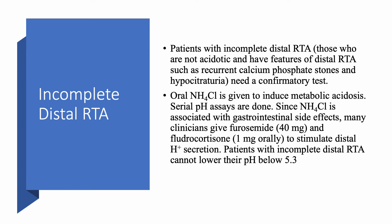What about incomplete distal RTA? In complete distal RTA the serum pH is low, but in incomplete distal RTA the pH is normal, yet the patient has features of distal RTA: recurrent calcium phosphate stones, low urine citrate, and nephrocalcinosis. A confirmatory test is needed. You challenge them by giving an acid load — ammonium chloride — which induces metabolic acidosis. You check serial pHs, and patients with incomplete distal RTA cannot lower their urine pH below 5.5 or 5.3. Because ammonium chloride has many GI side effects, many clinicians instead give furosemide 40 mg and fludrocortisone 1 mg orally to stimulate distal hydrogen secretion, then measure urine pH.